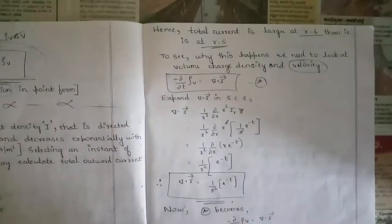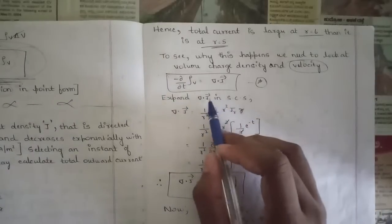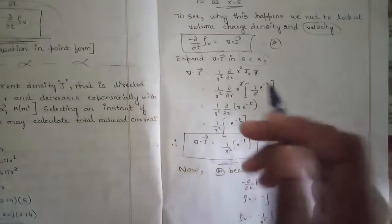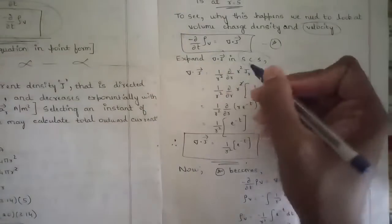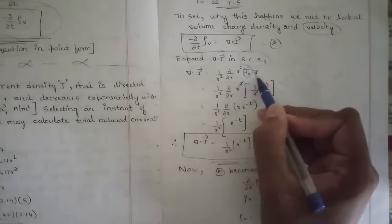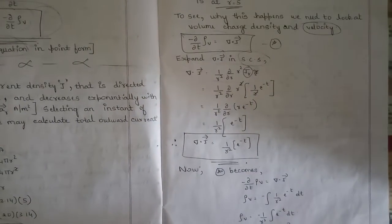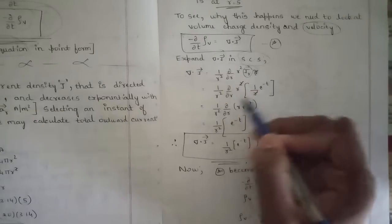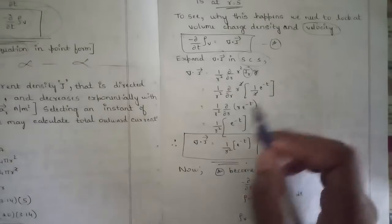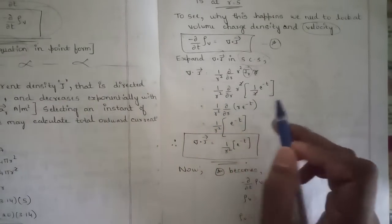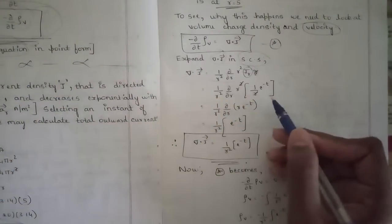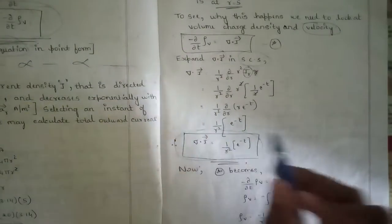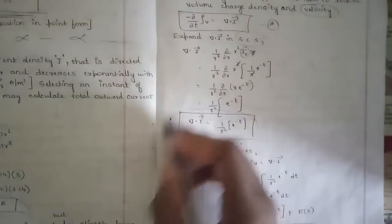Using the continuity equation relating volume charge density and current density, expand ∇·J in spherical coordinates since we are dealing with a sphere. Since only the J_r component is given, write (1/r²) · ∂/∂r(r² · J_r). Substituting J_r and cancelling r terms gives one by r squared times e to the power minus t. So ∇·J = (1/r²)·e^(-t).